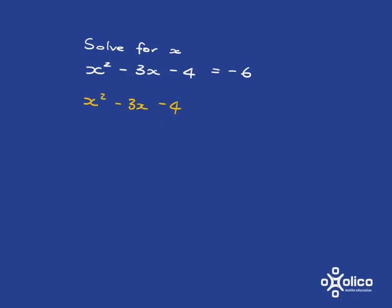To get rid of that negative 6 on the right-hand side, we're going to add 6. And so what we're going to have here then is x squared minus 3x plus 2 equals 0. Now we're in the situation where we've got equals 0 on the right, and we can go ahead and factorize.